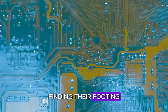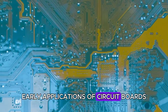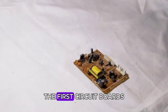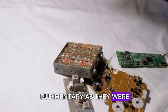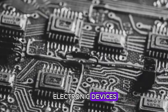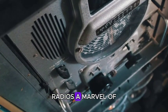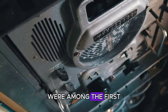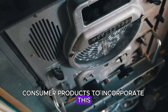Finding their footing, early applications of circuit boards. The first circuit boards, rudimentary as they were, played a crucial role in the development of early electronic devices. Radios, a marvel of the time, were among the first consumer products to incorporate this new technology.